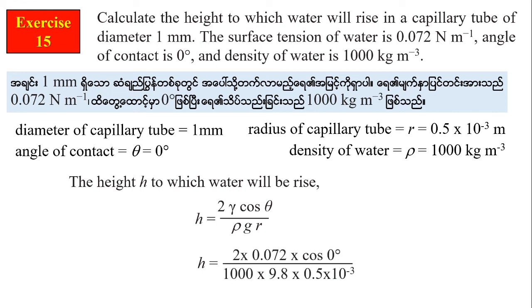Applying the formula H = 2T cosθ / (ρ g r): with cos 0° = 1, we get H = 0.02939 meters, which is 2.939 cm.